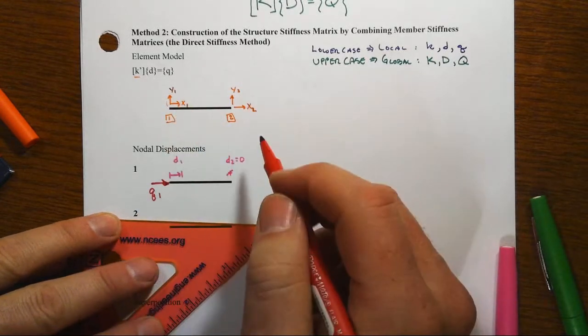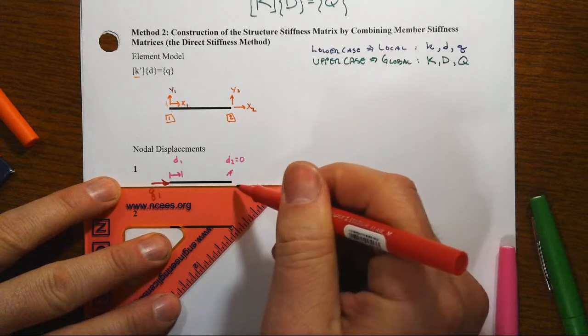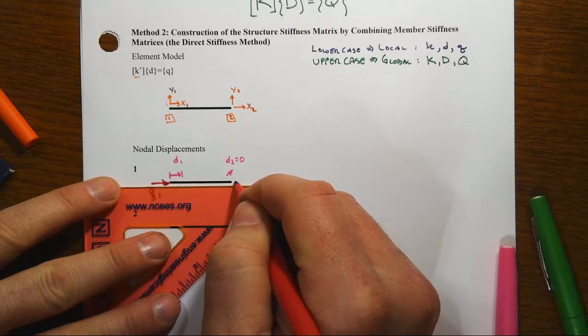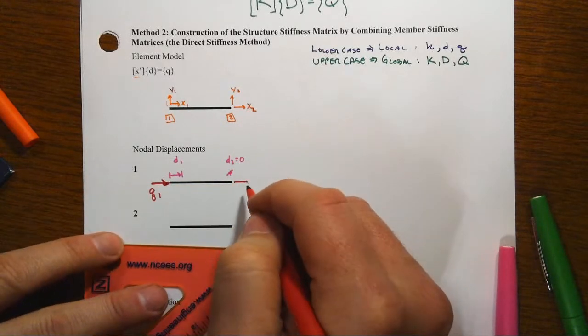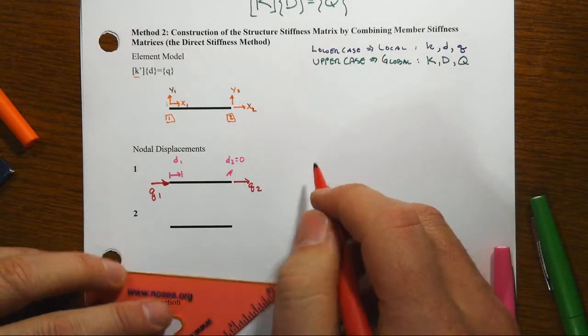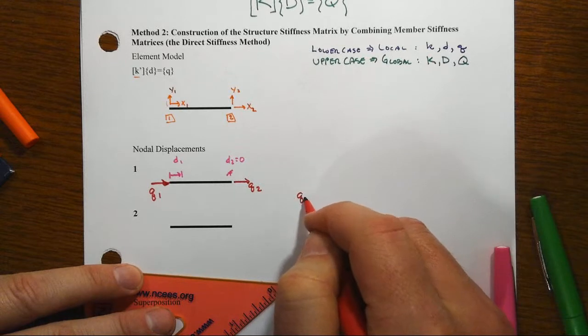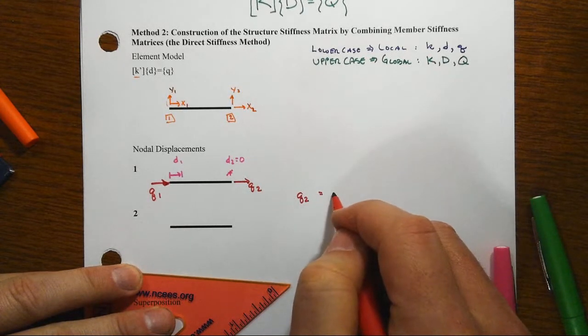Now this is the local system. So we'll call that little q sub one. And that happens to coincide also with the positive direction. Now at the other end, I know that in reality, I've got to have a q that goes in the opposite direction. But I'm going to show it acting in the positive direction and equilibrium will demand then that our little q2 will be then opposite of q1.